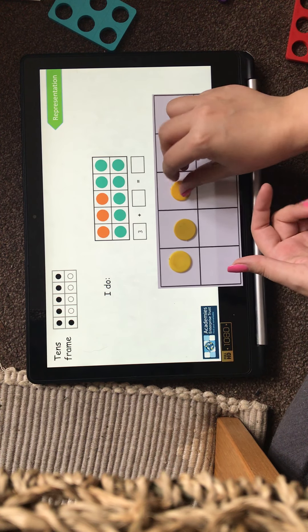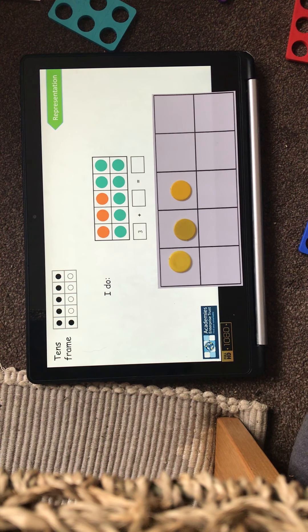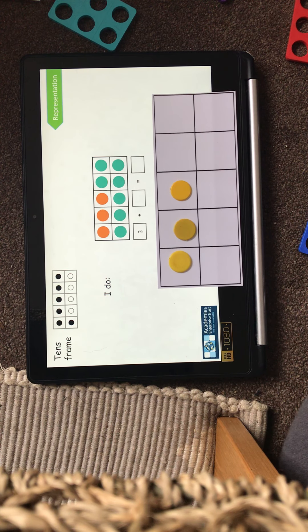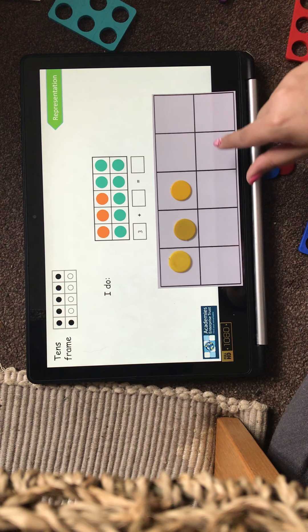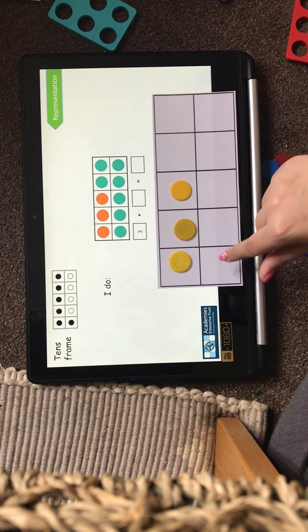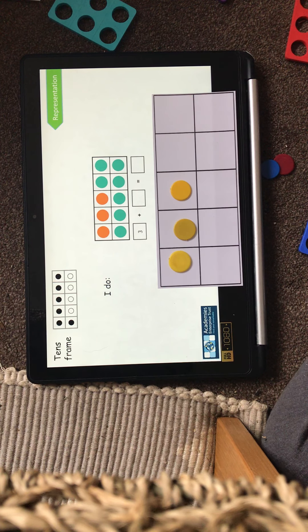1, 2, 3. Now I'm going to see how many counters I need to get to 10, because there's 1, 2, 3, 4, 5, 6, 7, 8, 9, 10. 10 spaces in total.